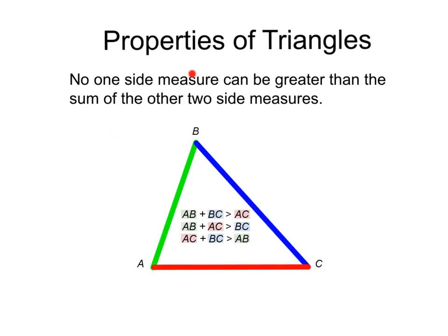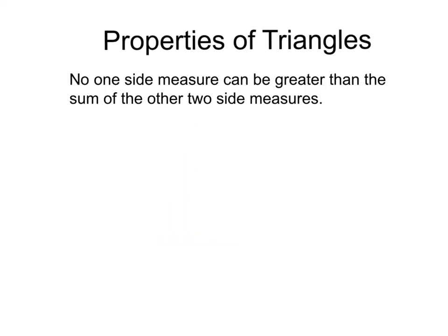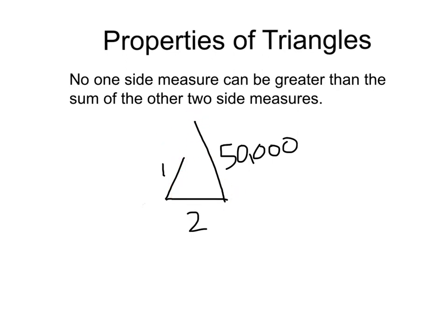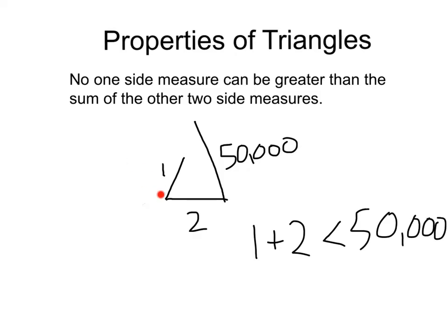Another characteristic of triangles is that no one side measure can be greater than the sum of the other two side measures. In other words, if you add up the length of any two sides, it's going to be bigger than the third side. Picture this: say you had a triangle and one side had a length of one, another side had a length of two, and another side had a length of 50,000. Would that work? No! There's no way that these ends would connect — this side's way too long. One plus two is actually less than 50,000, so this is an impossible triangle.